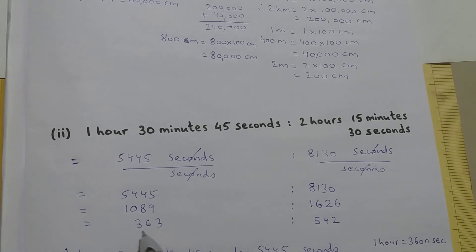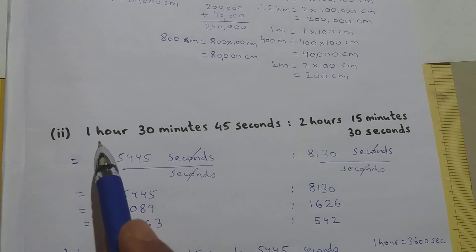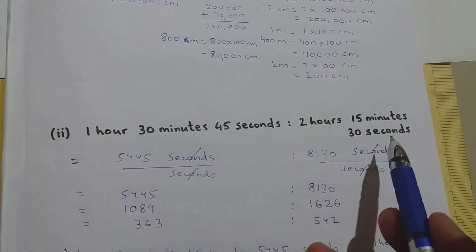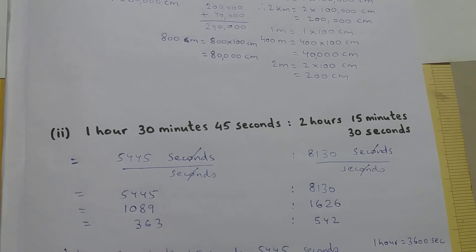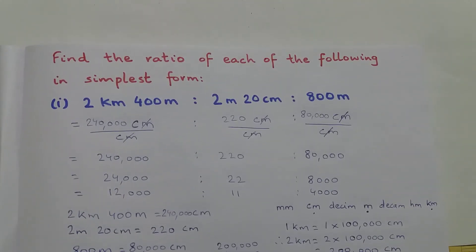We get 363 is to 542 and I cannot reduce it any further. So this is the answer for question number 2. The ratio of 1 hour 30 minutes 45 seconds to 2 hours 15 minutes 30 seconds in its simplest form is 363 is to 542. With that we have solved both questions of this question set.